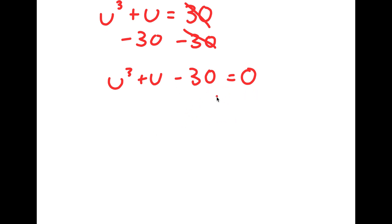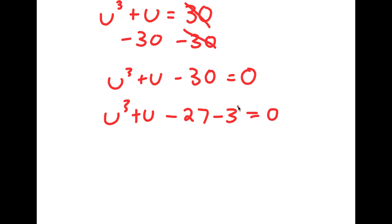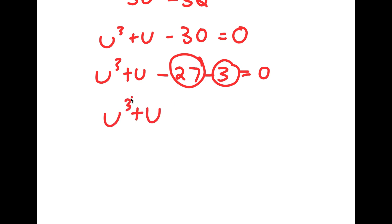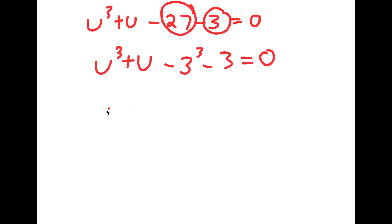We need to find what value of u makes this equation equal to 0. What I'm going to do is rewrite 30 as negative 27 minus 3. The reason is that 27 is the same thing as 3 to the power of 3. Notice we have something in the form u to the power of 3 plus u — we could think of u as 3 in this case. So 27 is 3 to the power of 3, and we have this minus 3. I'll put this in the form u to the power of 3 minus 3 to the power of 3 plus u minus 3 is equal to 0.